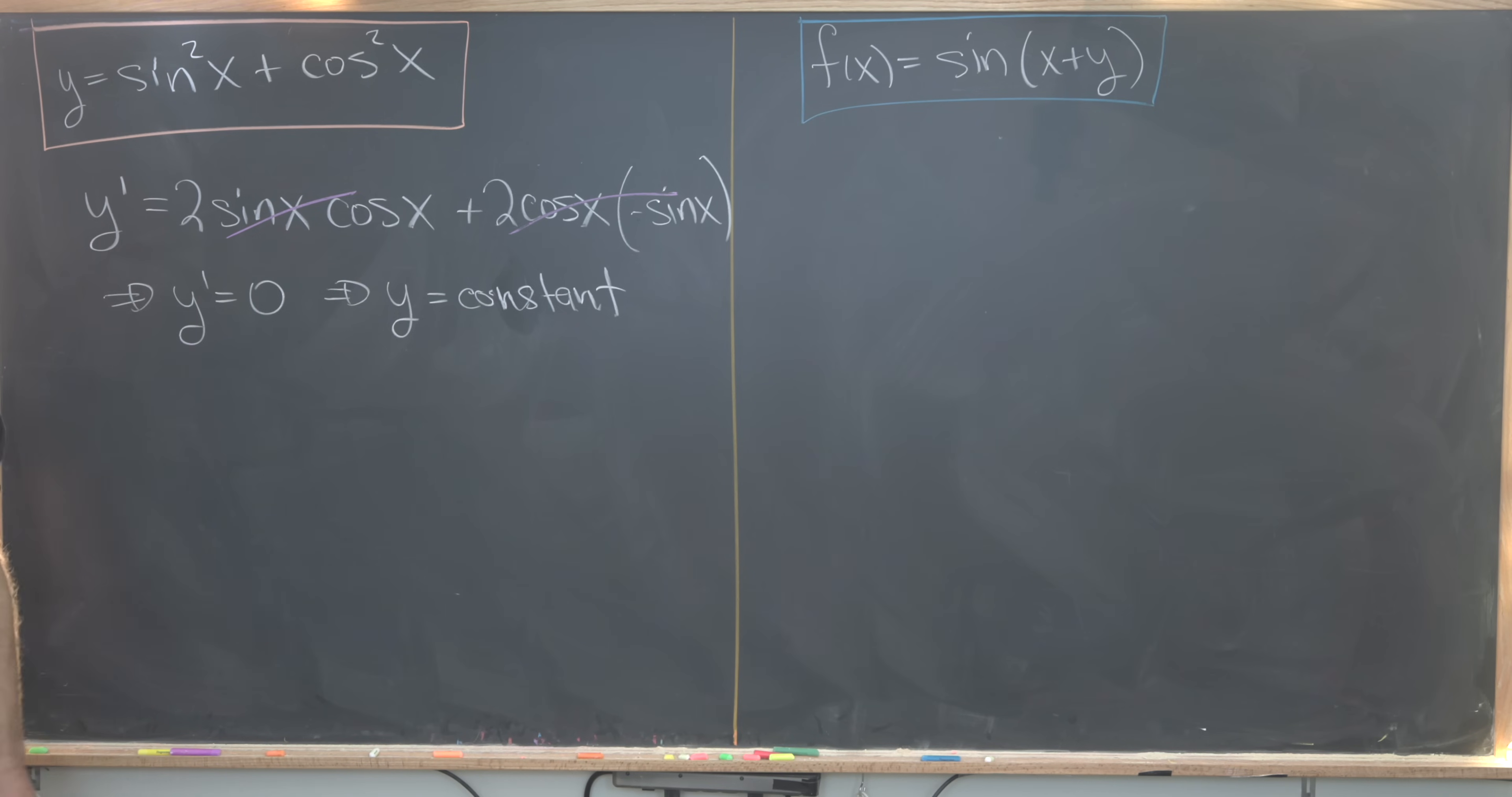What constant should it be? We can figure that out by evaluating y at any point. y(0) is sin²(0), which is zero, plus cos²(0), which is one. So y equals a constant—what constant? It's equal to one. Plugging that back gives us sin²(x) + cos²(x) = 1.